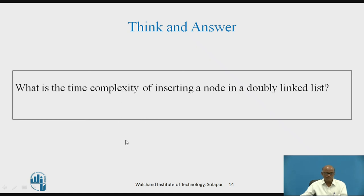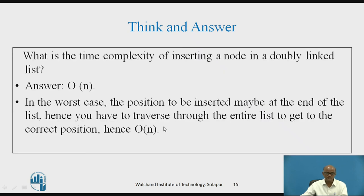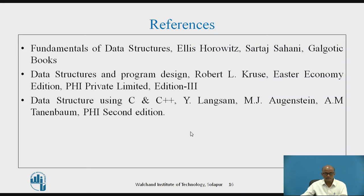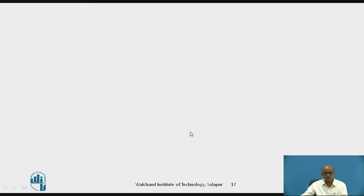Now let's find the complexity of inserting a node in a doubly linked list. Take a pause and try to answer. The answer is O(n). In the worst case, the position to be inserted may be at the end, so we have to traverse through the entire list to find the correct position. These are the references. I hope you understood how to insert a node at a specific location. Thank you.